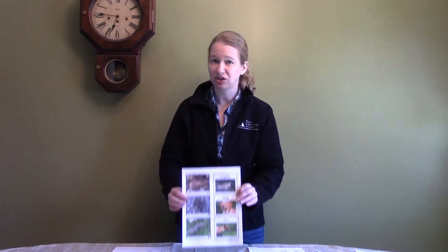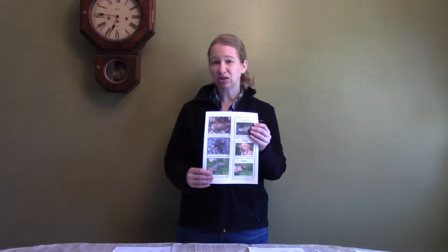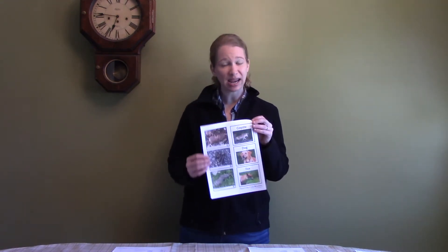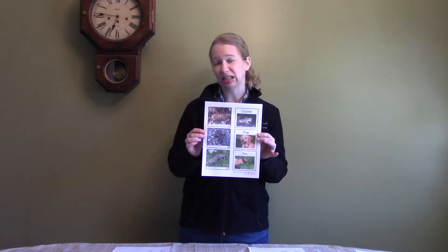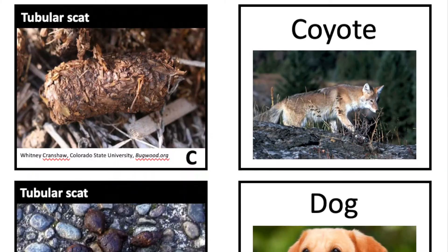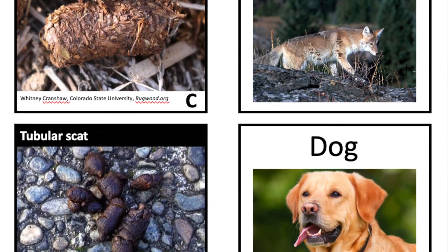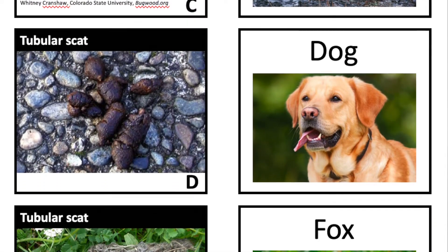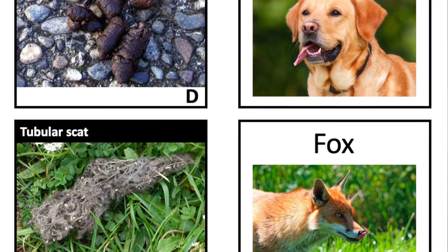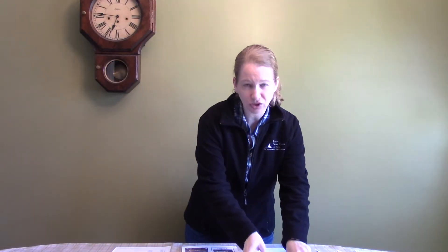So in today's activity, we have different matchup cards that you're going to be cutting out, and you're going to be trying to match them up. The handouts have scat on one side — remember, that's animal poop — and different animals on the other side. You'll cut up all of these and then try to match the different scat to the different animal.